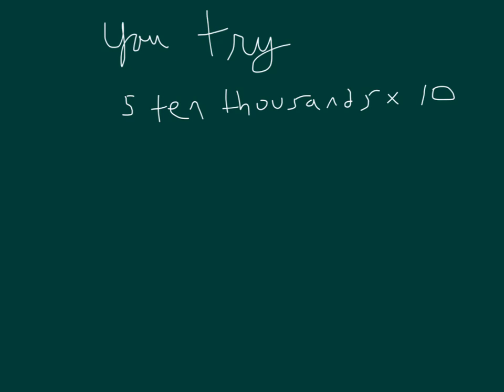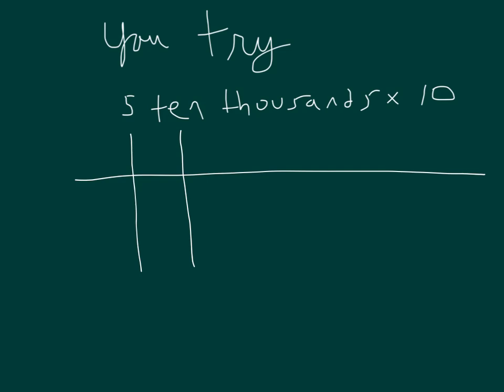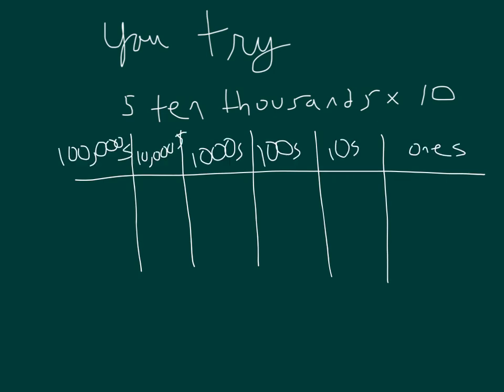Let's give you a chance to try. We have five ten thousands, and we're going to multiply it by ten. Start with drawing your place value chart. Then think about what happens to that number if you multiply by ten. I've labeled my place value chart with five ten thousands — one, two, three, four, five. And so, for each of those five ten thousands, we have to make them into ten. Pause the video if you have not done your work yet, so you can complete your work.